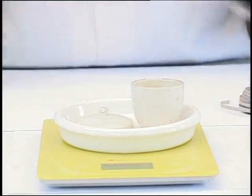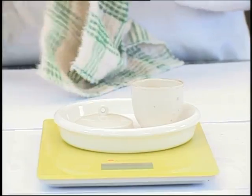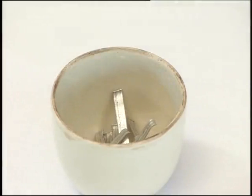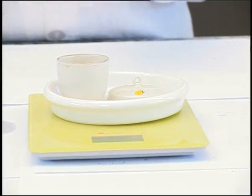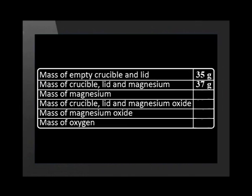Now that we have seen the concept of substances in excess and limiting reagents in theory, let us have a look at this concept practically. In the lab, let us do an experiment to determine which reactant is the limiting reagent and which is the substance in excess. We will react magnesium and oxygen together. We start by putting a lid on the empty crucible and measuring the mass of both together, which is 35 grams. We remove any oxidation from the magnesium strip by rubbing it with a cloth. Then we place the magnesium into the crucible and measure the mass of the crucible, lid and magnesium together, which is 37 grams. The mass of the magnesium is therefore 2 grams.